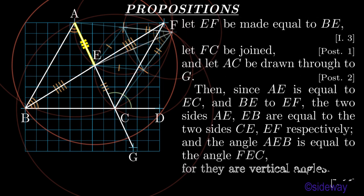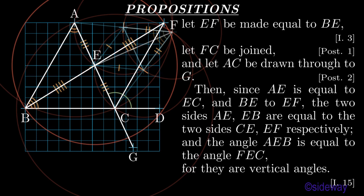Then, since AE is equal to EC, and BE to EF, the two sides AE, EB are equal to the two sides CE, EF respectively. And the angle AEB is equal to the angle FEC, for they are vertical angles, by Book 1 Proposition 15.